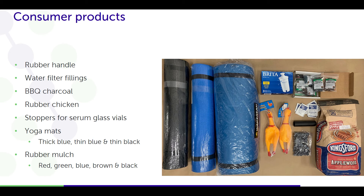We looked at a number of consumer products: a rubber handle, a Brita water filter, barbecue charcoal briquettes, a rubber chicken toy, stoppers for serum glass vials, yoga mats, and rubber mulch used on playgrounds. These are things actually in the marketplace, so you wouldn't think they would have any bad actors in them — but we found otherwise.